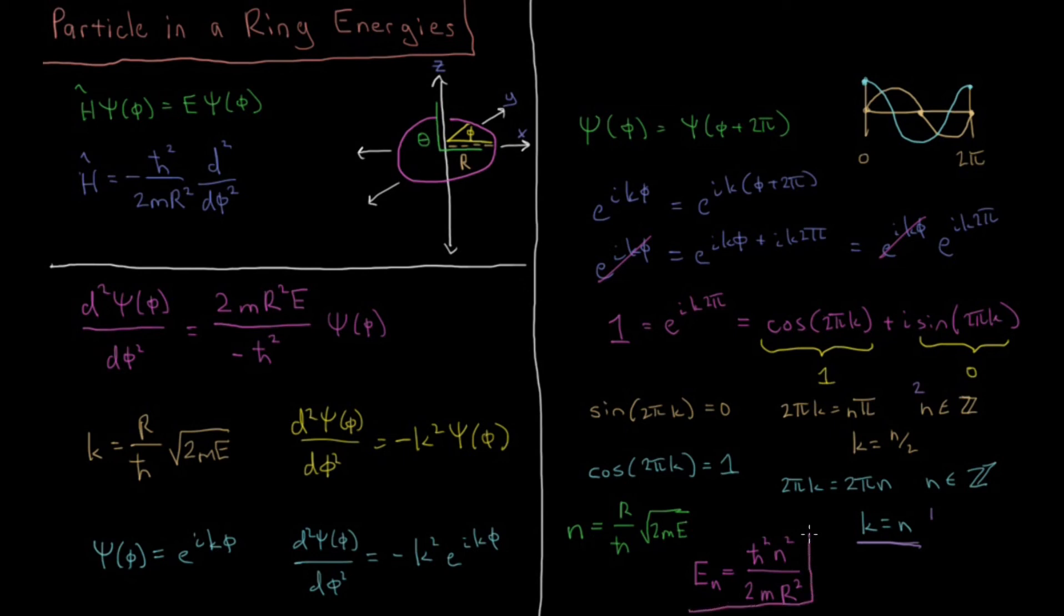So that's our final value there. And this n is constrained to be an integer. It can be either positive or negative. So it can be 0, plus or minus 1, plus or minus 2, etc. all the way up to plus or minus infinity.